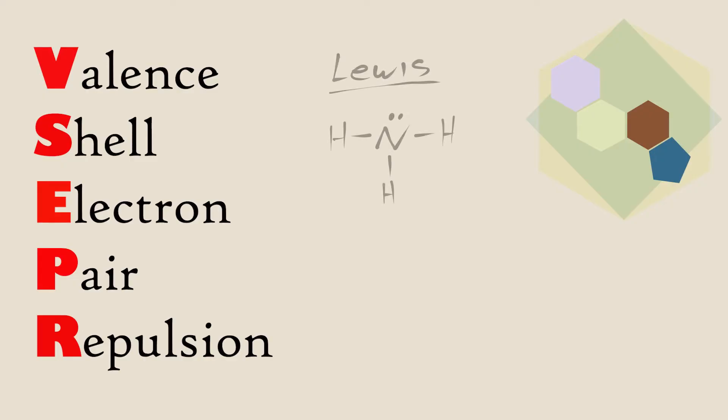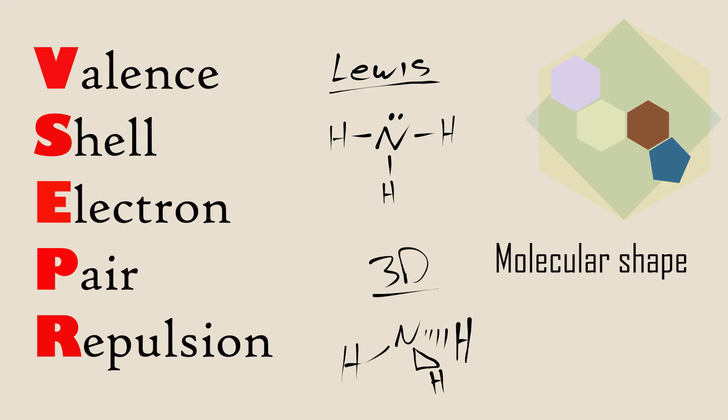The Lewis structure of a molecule gives us a two-dimensional picture which shows the relative placement of atoms and valence electrons. To construct the molecular shape of a molecule from the Lewis structure, valence shell electron pair repulsion theory, or VSEPR, is employed.